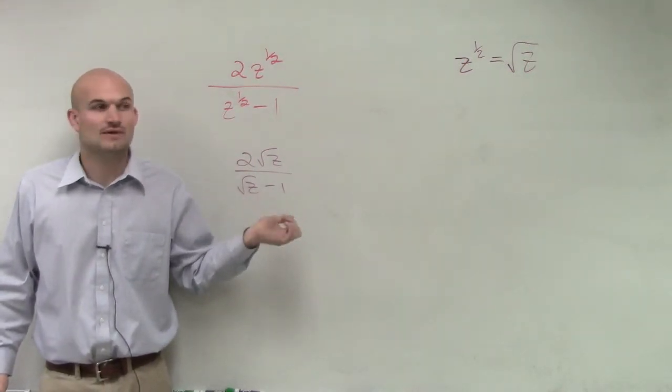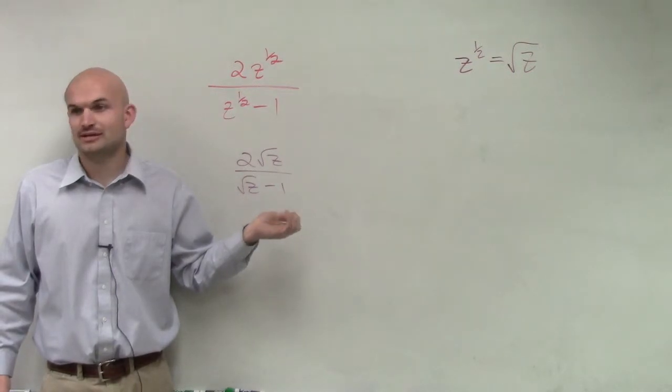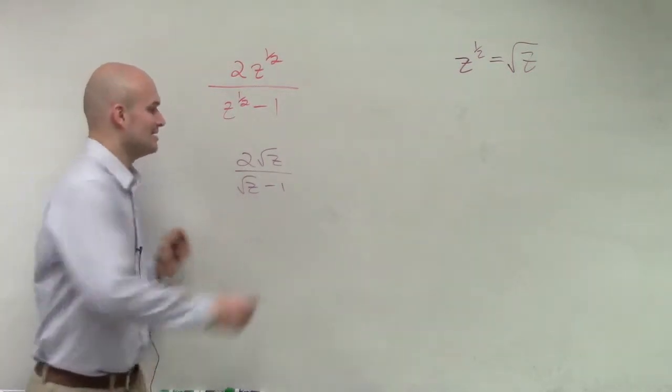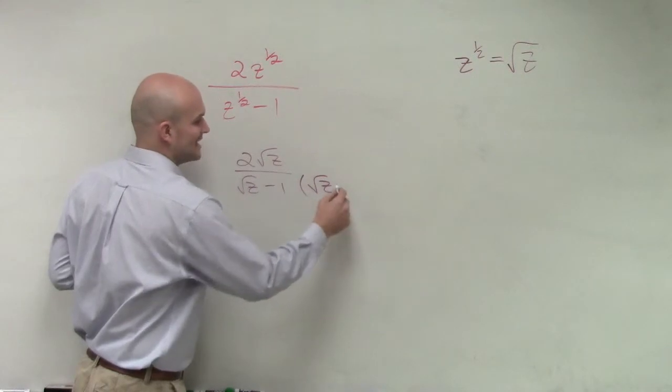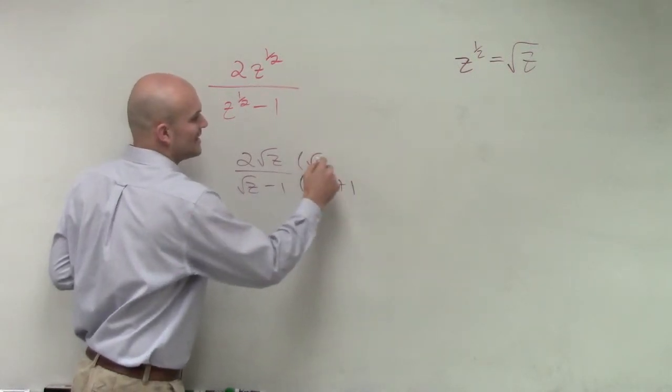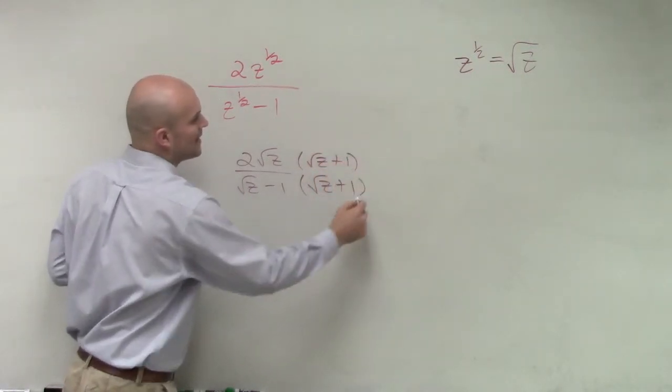Multiply by the, rhymes with, conjugate. Conjugate, right? So we had to multiply by the square root of z again, plus 1. And we did that on the top and the bottom, right?